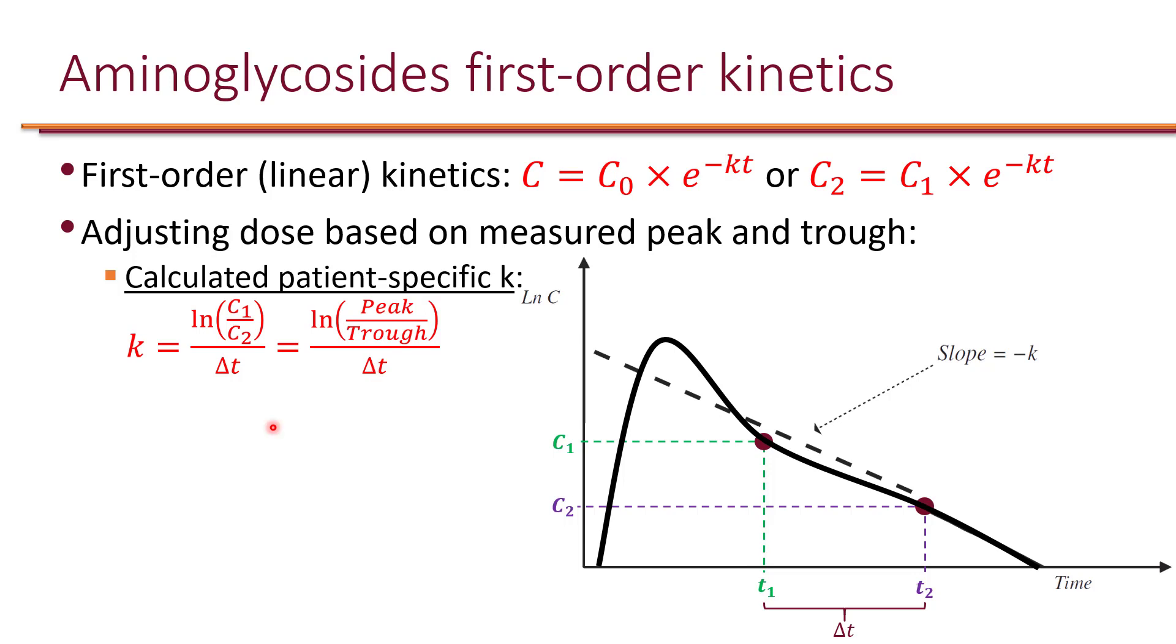Now, keep in mind that the first level, C1, has to be at least 30 minutes after the end of infusion. Because at the end of infusion, you have your actual peak. But if you actually measure the peak at the end of your infusion, then you end up with the wrong slope. For example, if you use this as your peak and then with the C2 concentration and you calculate the slope, you can see that the slope is very different.